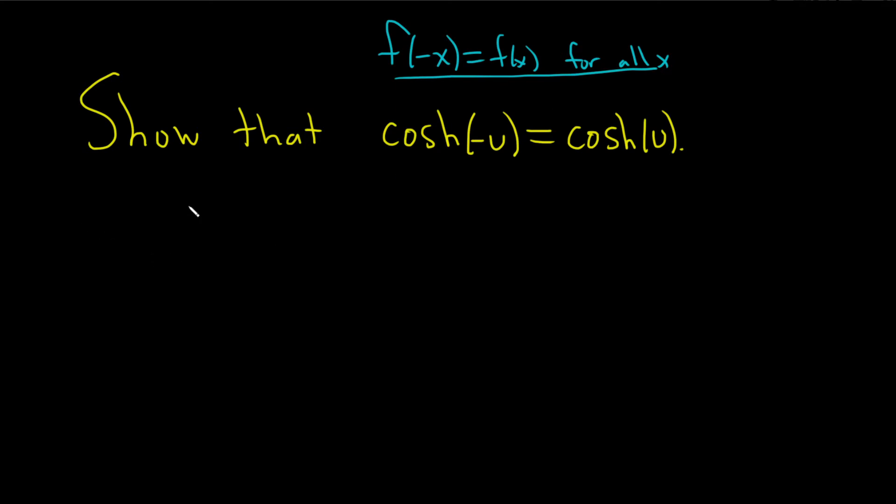Let's go ahead and do it and before we do let me just recall over here the definition of cosh of x. Just to use a different variable. The cosh of x is e to the x plus e to the negative x over 2. So it's basically the average of e to the x and e to the negative x.